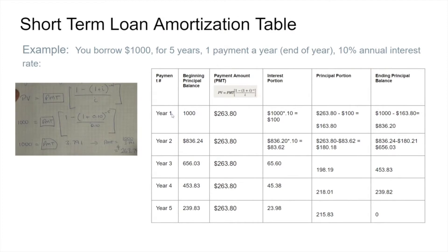It doesn't matter if it's five years, 500 years, 50 payments, or 500 payments — the mechanics of how you do this are exactly the same. You can use spreadsheets to do this. Excel has a sheet to do this; you can find the template already set up. You can find online calculators that will do exactly this as well. So that's the amortization table — that's the first thing that we want to do. We did some examples; this kind of exemplifies how it actually works.